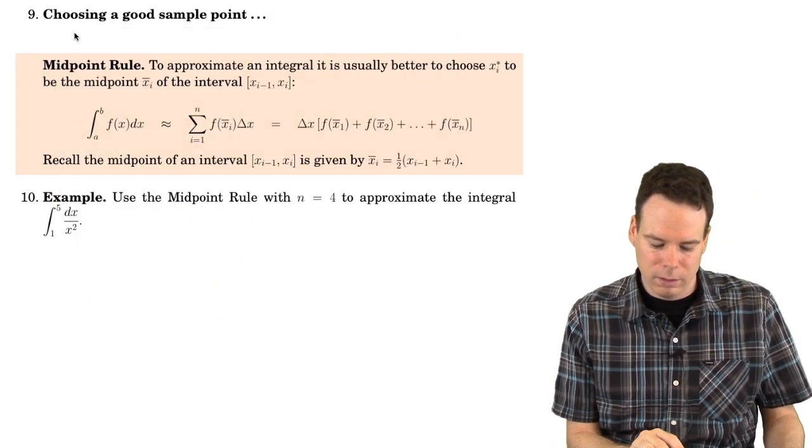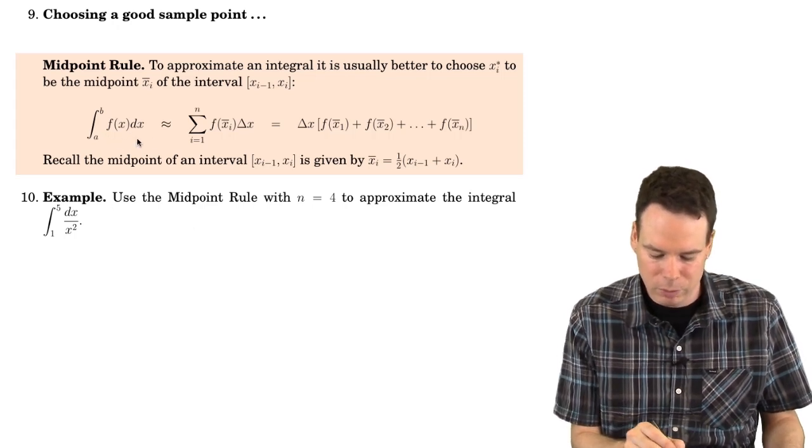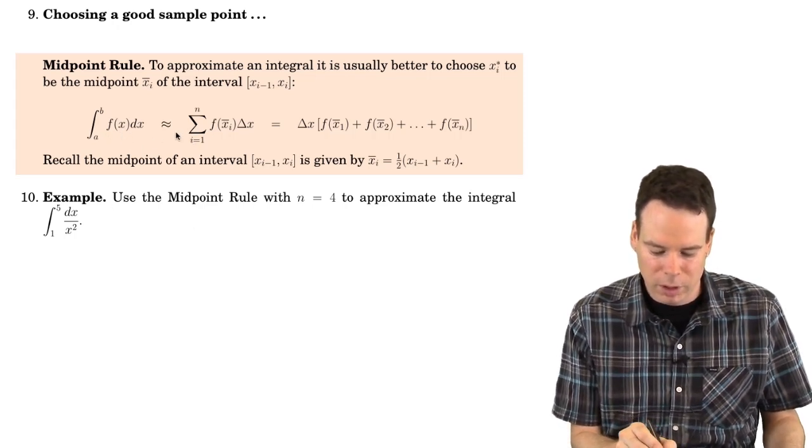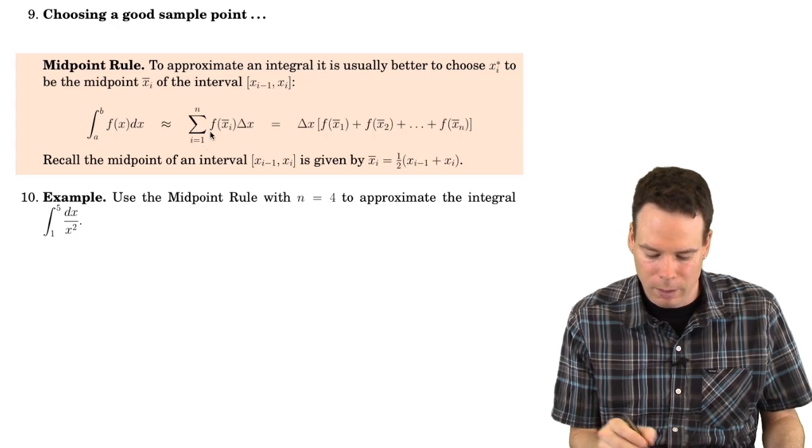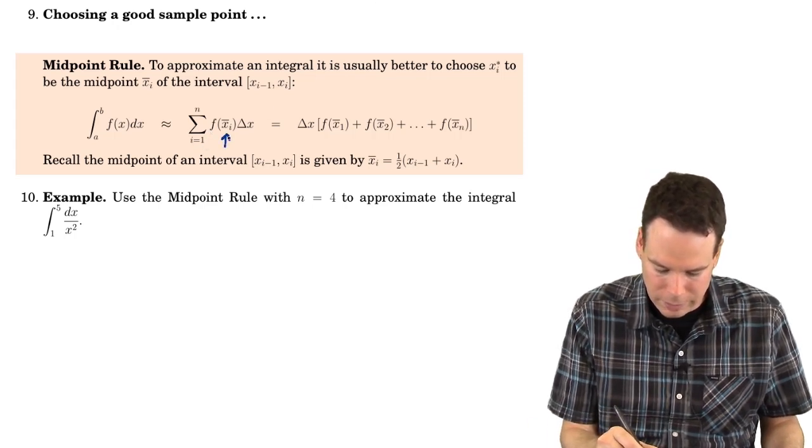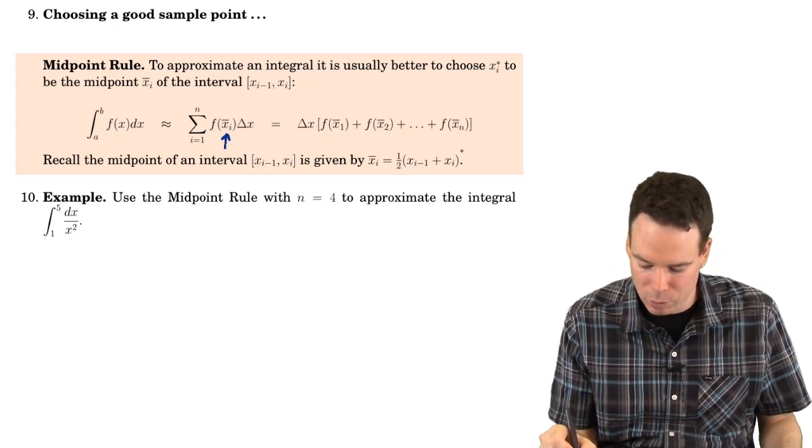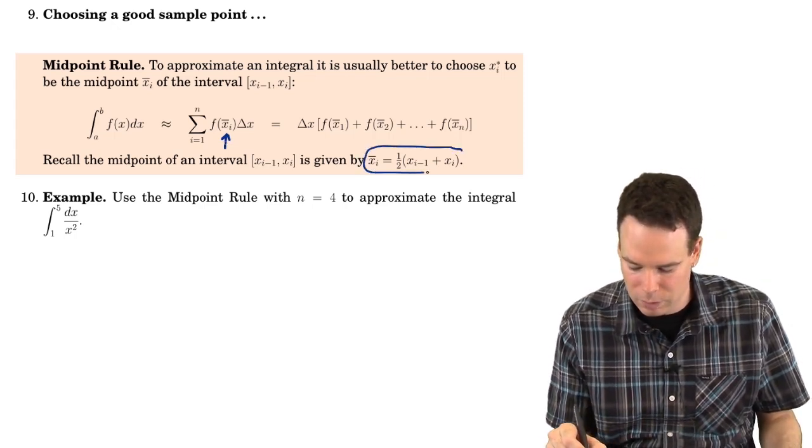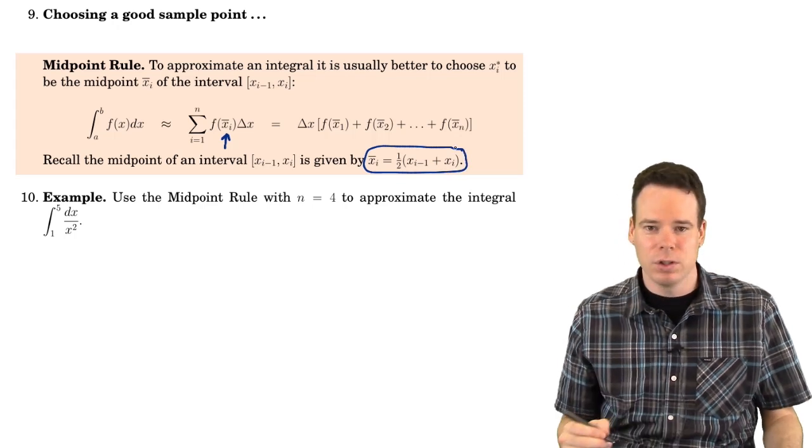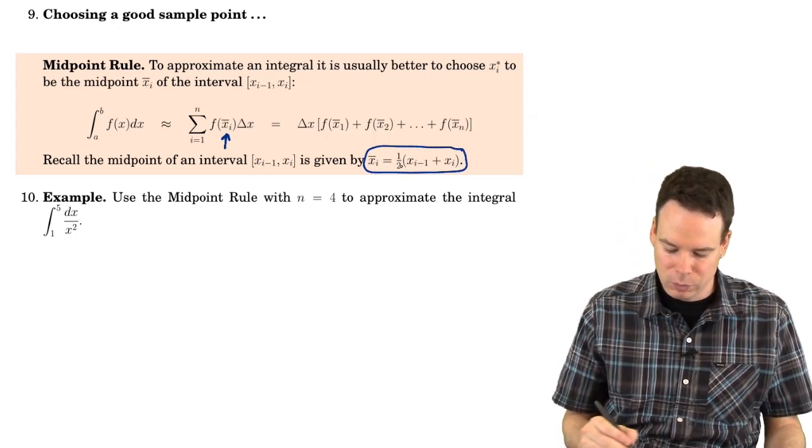So in this case let's just work out an example using the midpoint rule. And the midpoint rule is you can approximate the integral by using a sum where you take as your xi star the midpoint of the interval. What's the midpoint of an interval? The midpoint of an interval is just the average of the endpoints. Add up the two endpoints, divide by two. So let's look at an example.